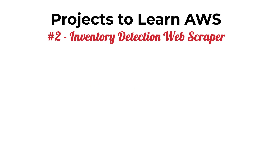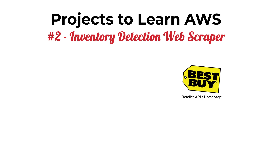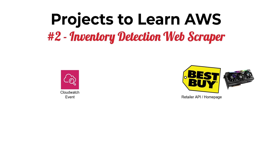Project two is an inventory detection web scraper. Say you have a retailer where you're looking to purchase an item — maybe it's something like Best Buy or Target — and you just can't seem to get your hands on it, like a 3080 video card. To build a serverless application that detects inventory levels, we start with CloudWatch Events, which allow you to trigger serverless cron jobs at regular intervals. We wire that up to a Lambda function, which will hit that web page and scrape it for resources, refreshing every one minute or even shorter intervals to stay competitive.